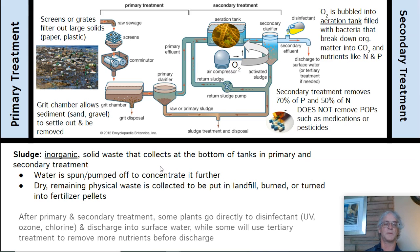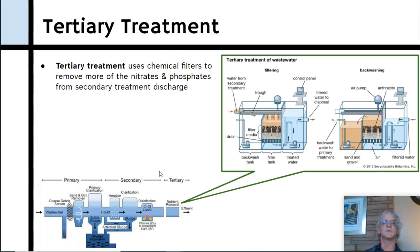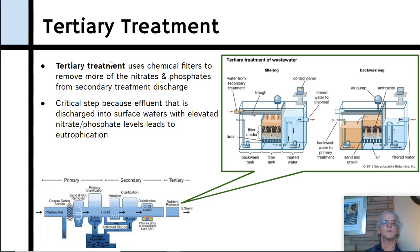After primary and secondary treatment, some plants go directly to disinfection — such as ozone and chlorine — and discharge into surface waters, while some use tertiary treatment to remove more nutrients before discharge. Hyperion unfortunately just does UV, ozone, and chlorine. Tertiary treatment uses chemical filters or plain filters to remove more nitrates, phosphates, viruses, and bacteria. The critical concern is that effluent discharged into surface water with elevated nitrogen and phosphate levels leads to eutrophication. Tertiary treatment is expensive and not always used.